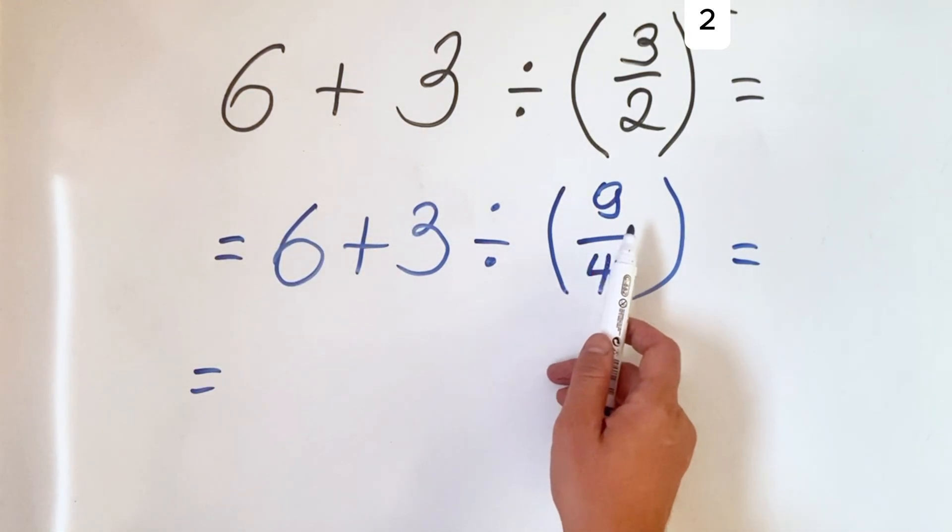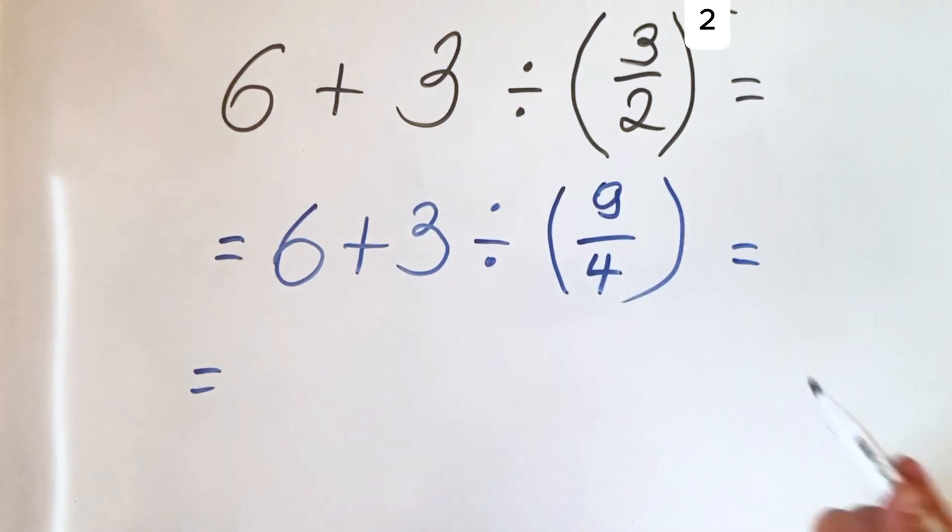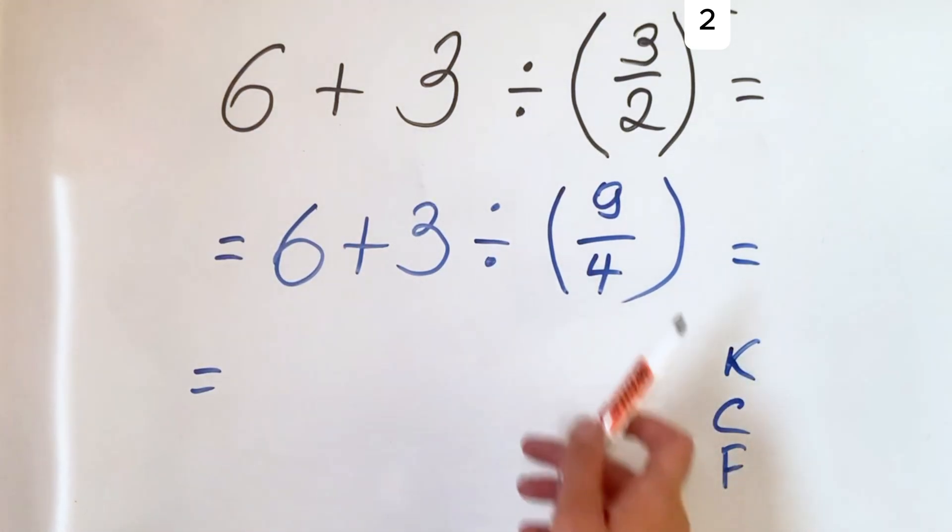When we need to divide by a fraction, we can remember the KCF rule, which means keep the first, change the sign, and flip the second.